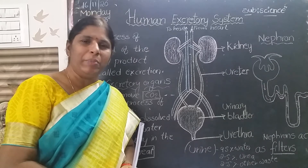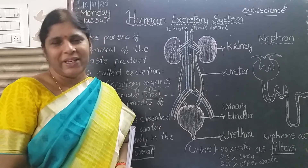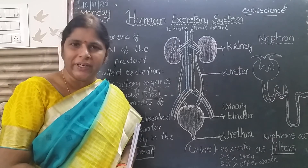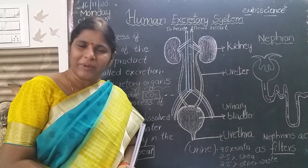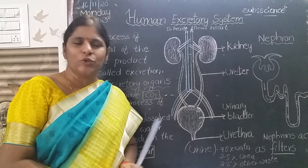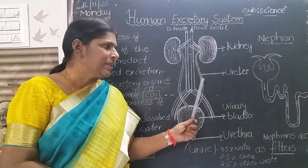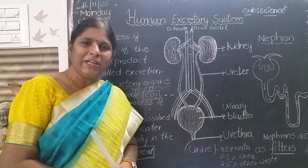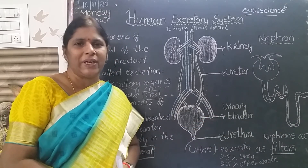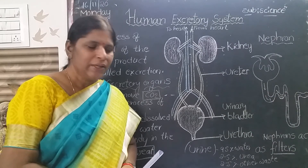What are the main excretory organs? Kidneys. How many kidneys do we have? Two kidneys. What is the shape of the kidney? Bean-shaped. What are the narrow long tubular structures? Ureters. What is the main job of the nephron? It filters the blood.